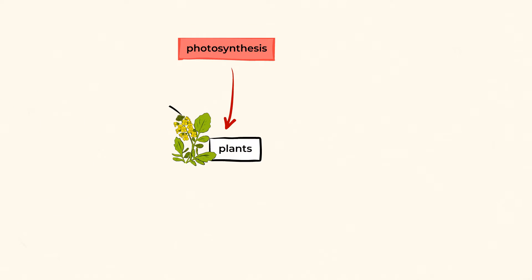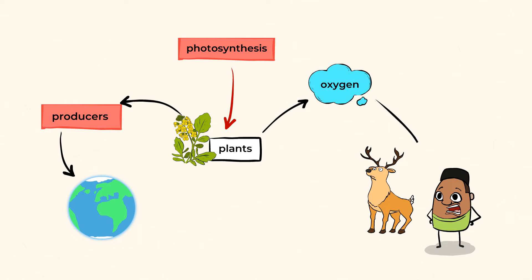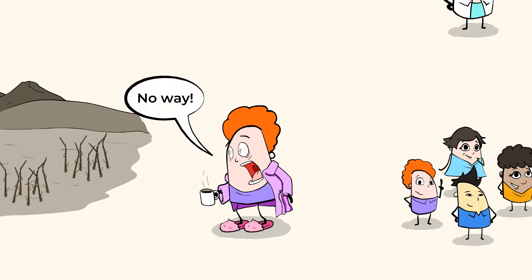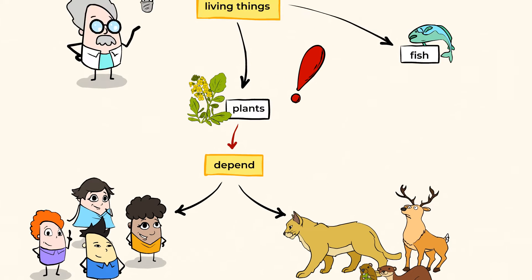Photosynthesis allows plants to be producers for planet Earth and lets them make the nutrients they need to survive. Because of photosynthesis, we have oxygen for humans and other forms of life to live. Without plants and photosynthesis, Earth would be an empty place. I'm not exaggerating. It's because of plants that our planet is bursting with life.